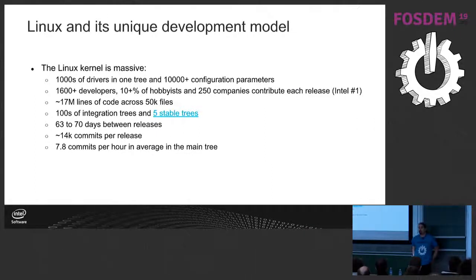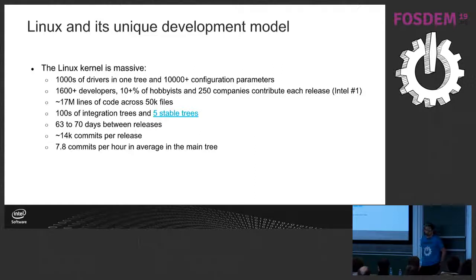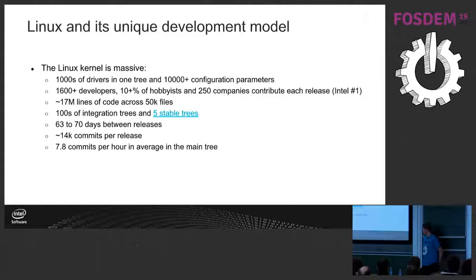Some numbers here. What you can see is that there's a lot of drivers, a lot of developers, and it's one single tree. The crazy thing is there's a new version coming every two to three months with 14,000 commits and an average of eight commits per hour.